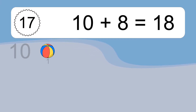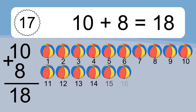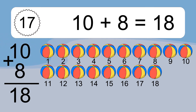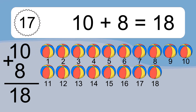10 plus 8 equals what? 10 plus 8 equals 18. Let's count it: 1, 2, 3, 4, 5, 6, 7, 8, 9, 10, 11, 12, 13, 14, 15, 16, 17, 18.